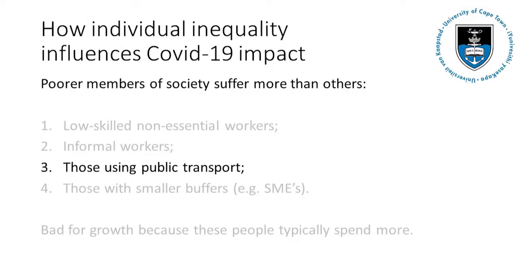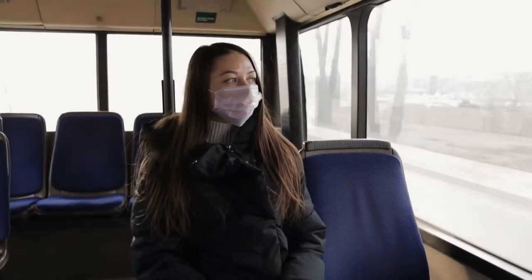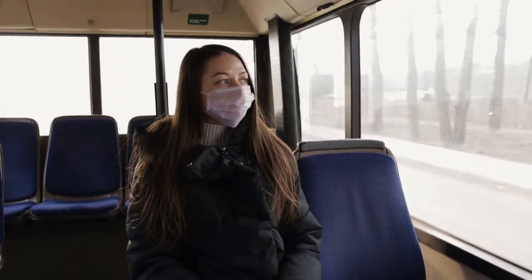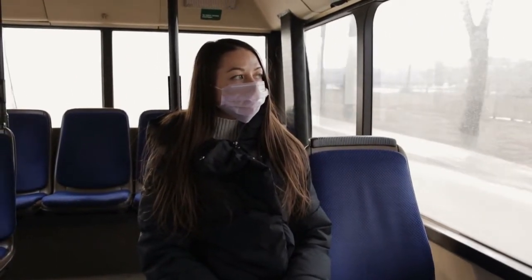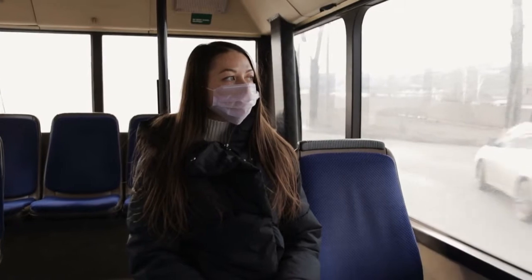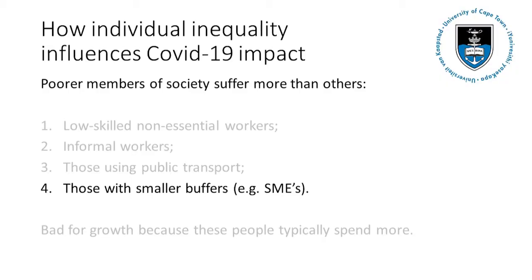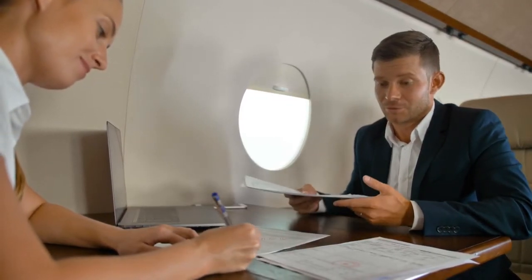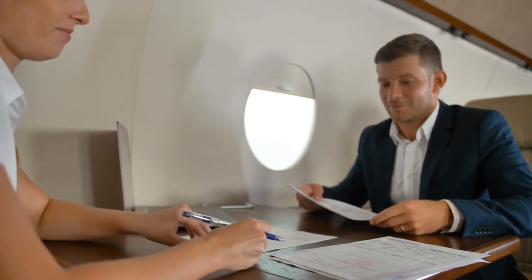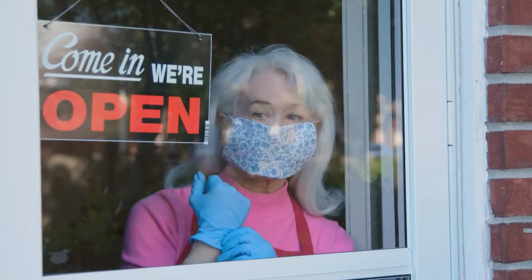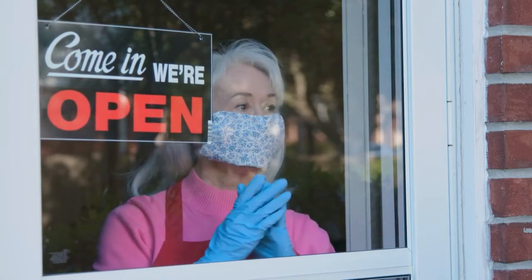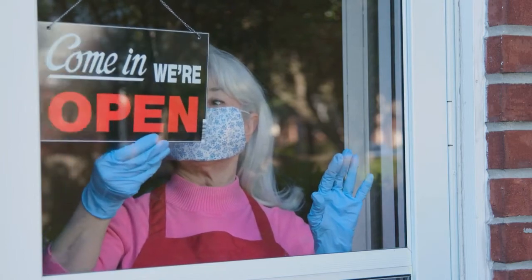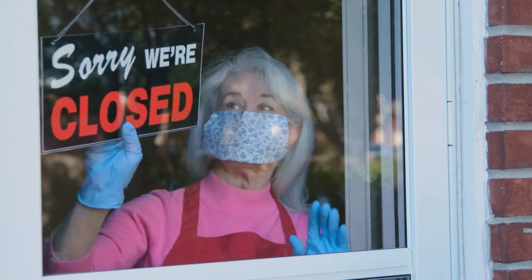Third, poorer people are generally more reliant on public transport than those who are rich enough to own a car. Thus, poor people might be particularly hard hit by a public transport ban or might get sick while using public transport and lose their job because of it. Another reason why the poor suffer more is that they have smaller buffers — most large businesses have reserves to survive a longer period with little to no income, while small businesses might not and will go out of business. Once the economy picks up, they are no longer in a position to compete with larger businesses.